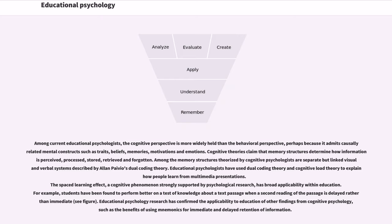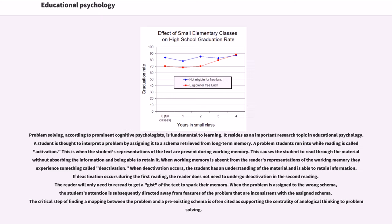Educational psychologists have used dual coding theory and cognitive load theory to explain how people learn from multimedia presentations. The spaced learning effect, a cognitive phenomenon strongly supported by psychological research, has broad applicability within education. For example, students perform better on a test of knowledge about a text passage when a second reading is delayed rather than immediate. Educational psychology research has also confirmed the benefits of using mnemonics for immediate and delayed retention of information. A student is thought to interpret a problem by assigning it to a schema retrieved from long-term memory. A problem students encounter while reading is called activation, when the student's representations of the text are present during working memory, causing them to read through material without absorbing it.